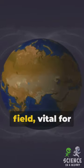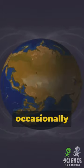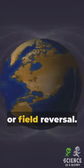Earth's magnetic field, vital for shielding us from harmful solar radiation, occasionally undergoes a dramatic flip known as a magnetic pole shift or field reversal.